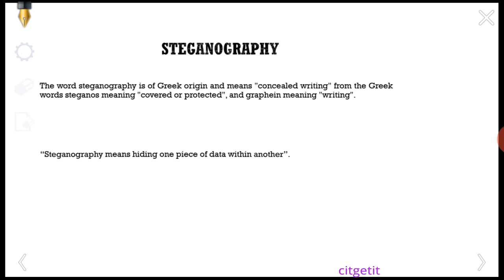Steganography is a Greek word. 'Stegnos' is the root of the steganography word. Steganography is hiding one piece of data within another. This is the art and science of writing hidden messages in such a way that no one apart from the sender and intended recipient suspects the existence.